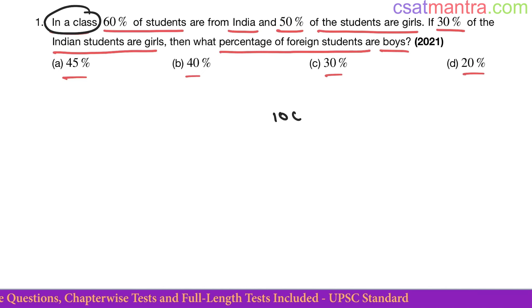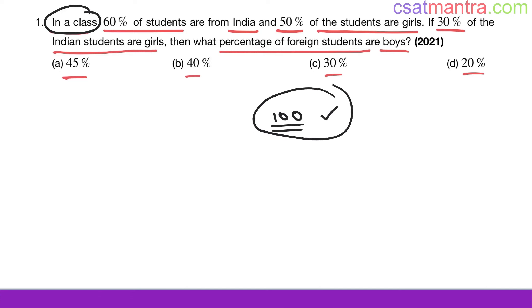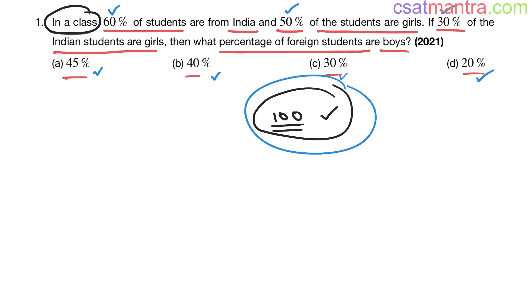I'm assuming the number of students in the class as 100. Am I violating any rule given in the problem? You cannot simply assume this value for any problem — you must know where to assume and where not to. This is what we call the 'without loss of generality' concept: when you assume, you are not violating any rule given in the problem. If everything in a problem is mentioned in percentages, then you can assume any base value.